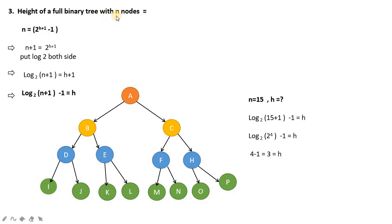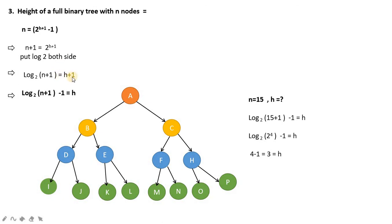A full binary tree means each node has two children and all leaf nodes are at the same level. Using the formula n = 2^(h+1) - 1 and rearranging: n + 1 = 2^(h+1), applying log base 2: log₂(n+1) = h+1, therefore h = log₂(n+1) - 1. This gives us the height if we know the number of nodes.